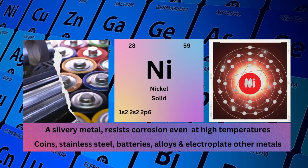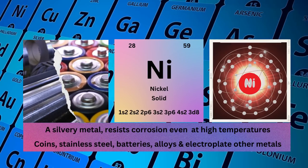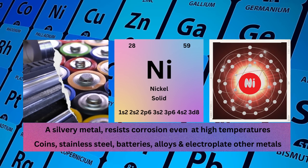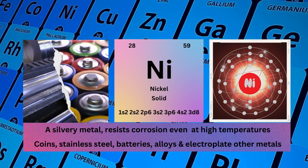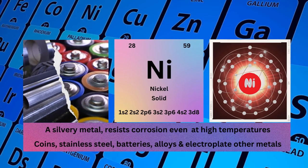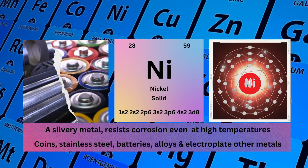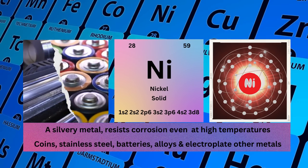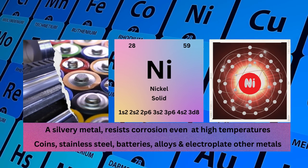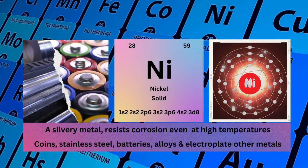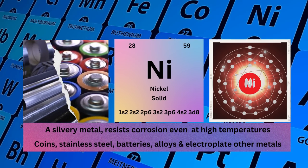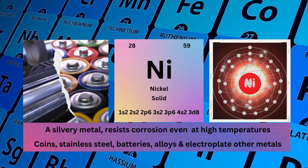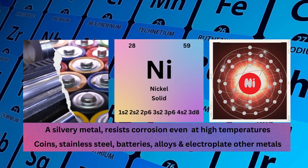Nickel. Atomic No. 28. Mass No. 59. Symbol Ni. State Solid. Electronic Configuration 1S2 2S2 2P6 3S2 3P6 4S2 3D8. Physical Properties: A Silvery Metal that Resists Corrosion Even at High Temperatures. Nickel is used for coins, stainless steel, batteries, alloys, and to electroplate other metals.